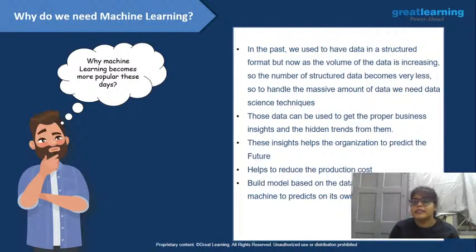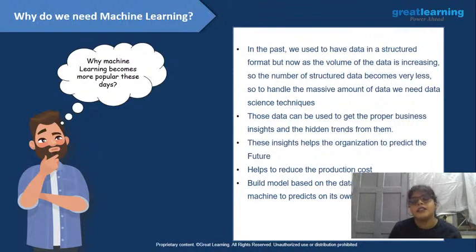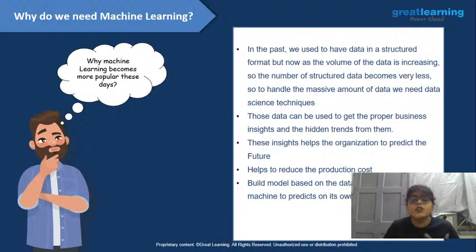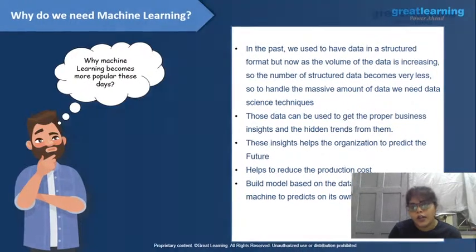Machine learning algorithms help us build models that work for us — for example, forecasting sales using past data. This is why data science and machine learning are booming right now and will continue to do so in the coming years. The main reason is that they extract useful insights from data that would otherwise be unusable, helping businesses focus and grow.